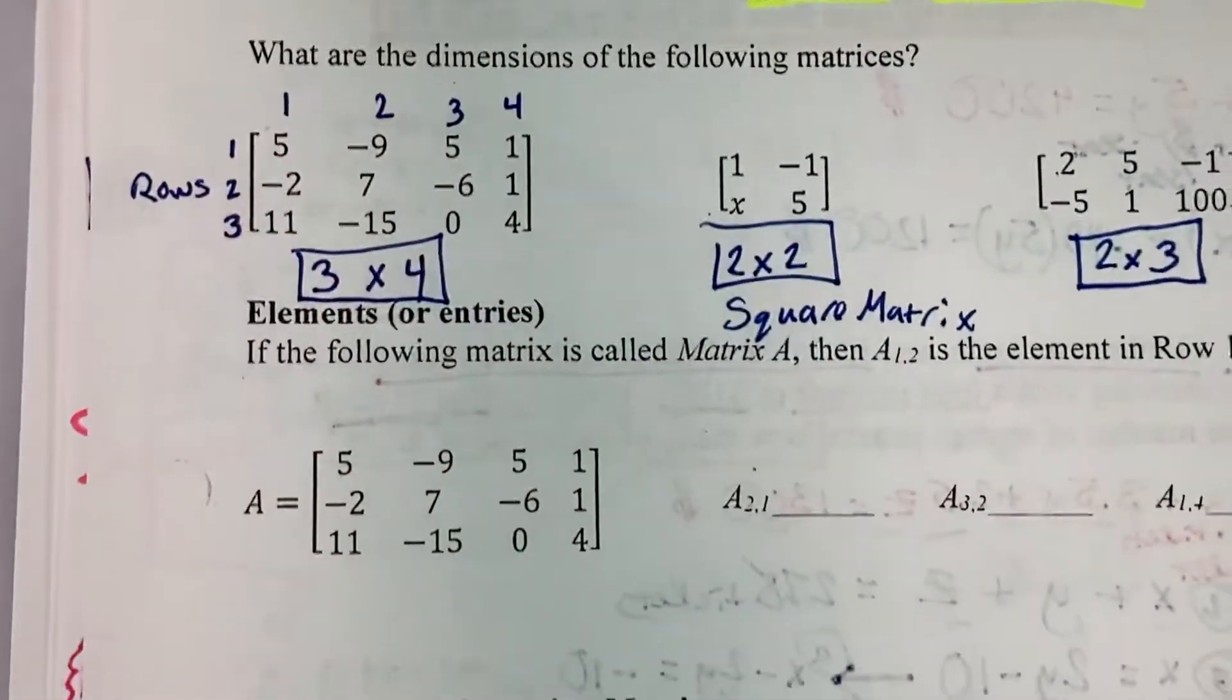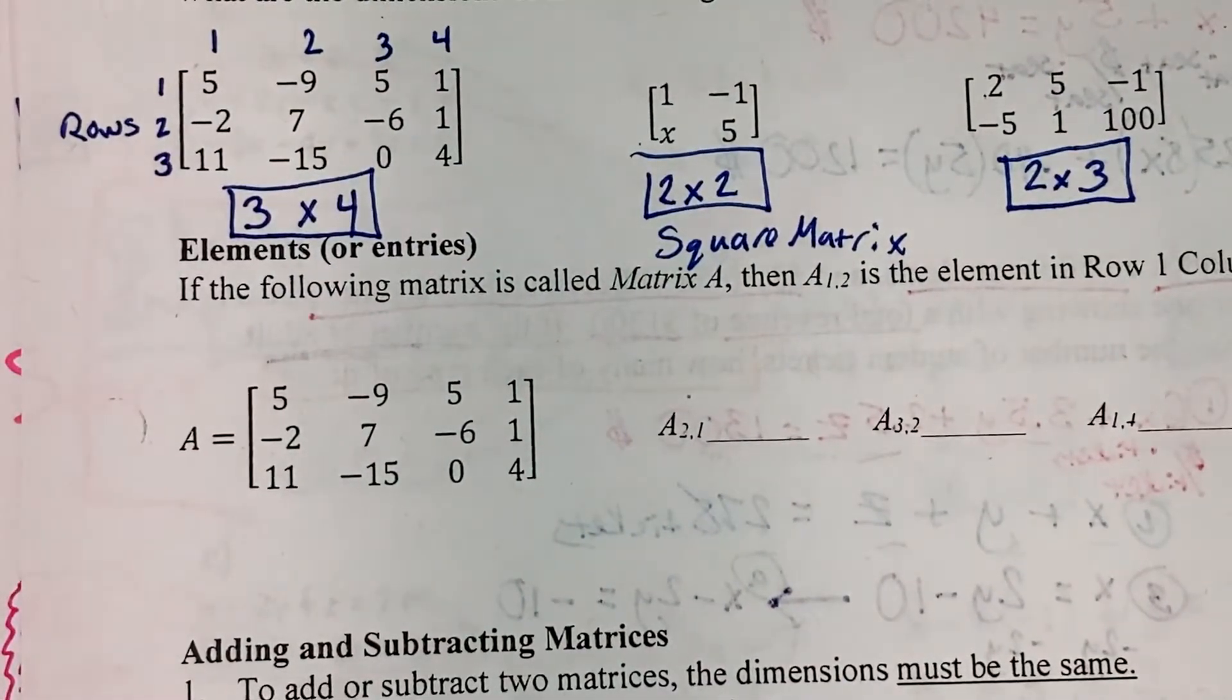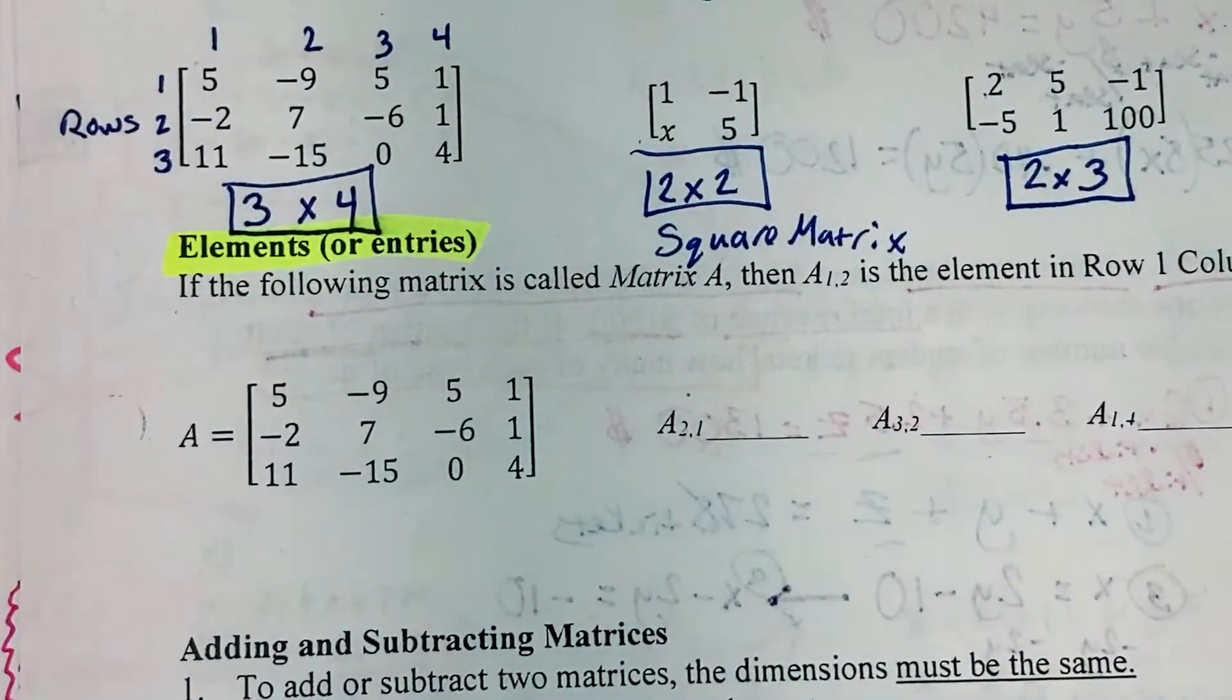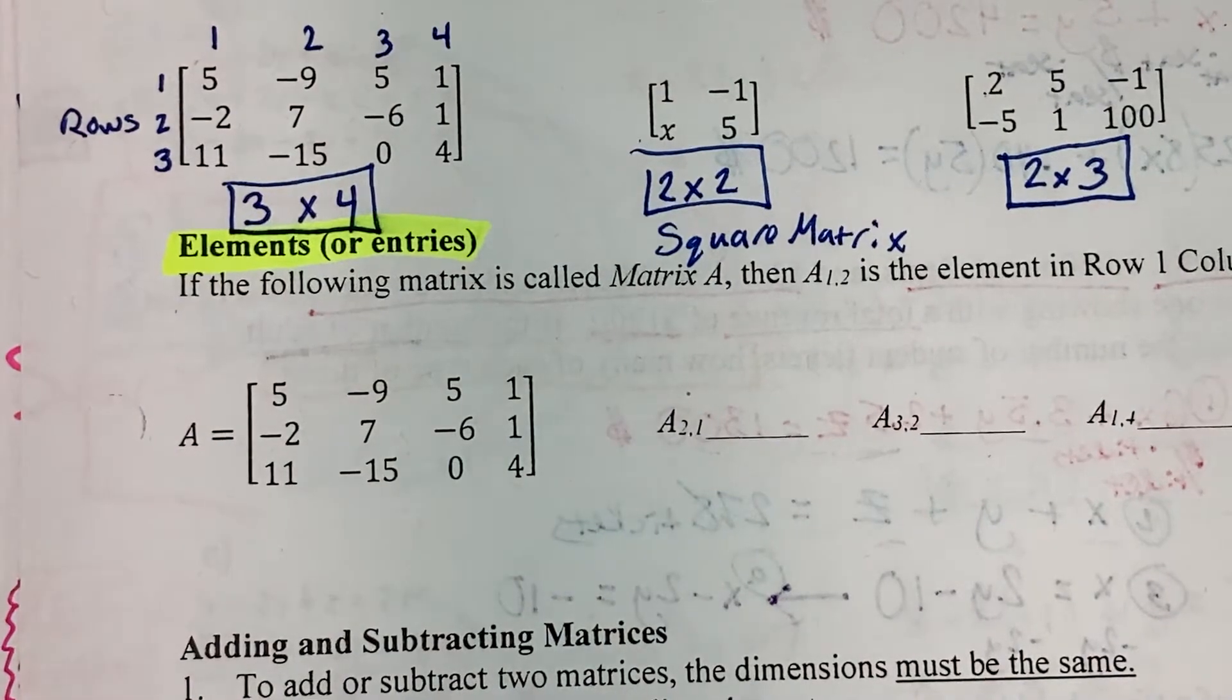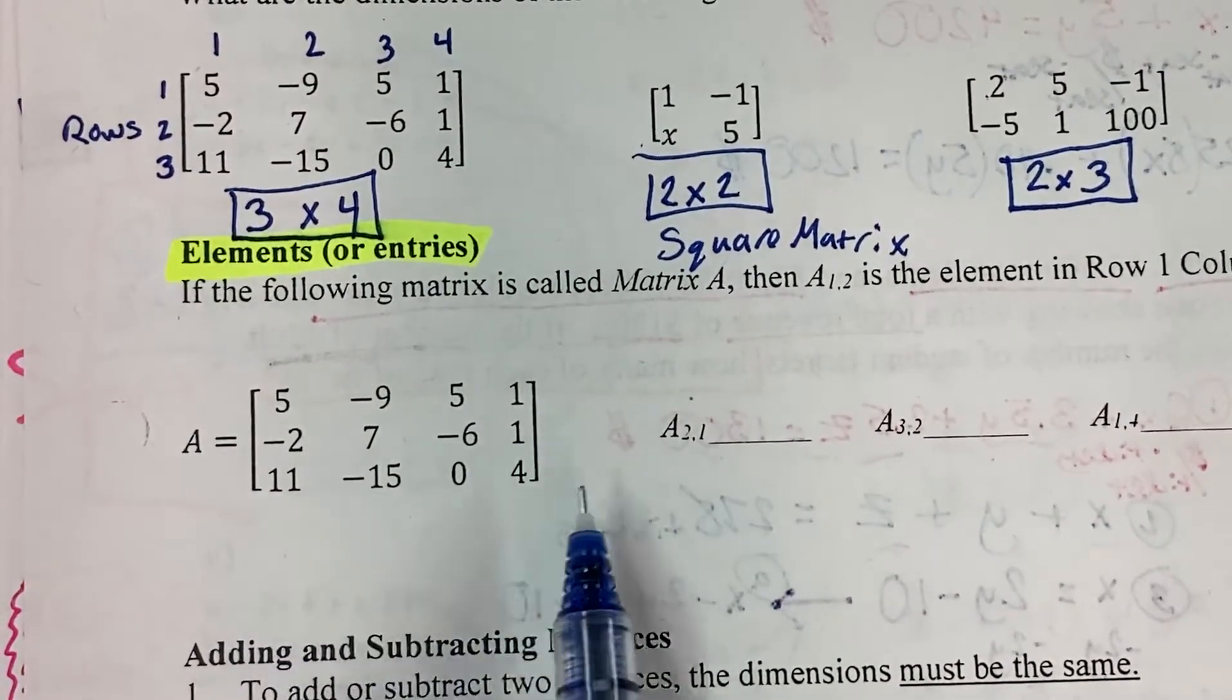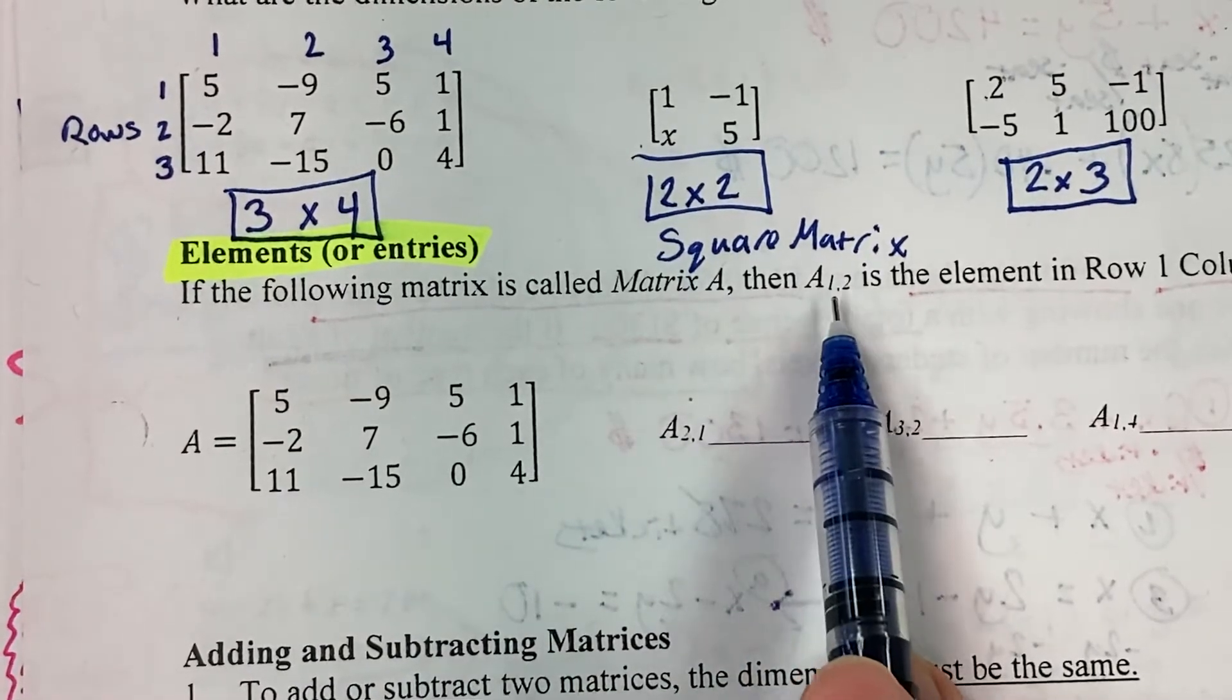Our next feature of a matrix are the elements or the entries. Sometimes textbooks will call them the cells as well. So if the following matrix is called matrix A, or A equals that stuff,